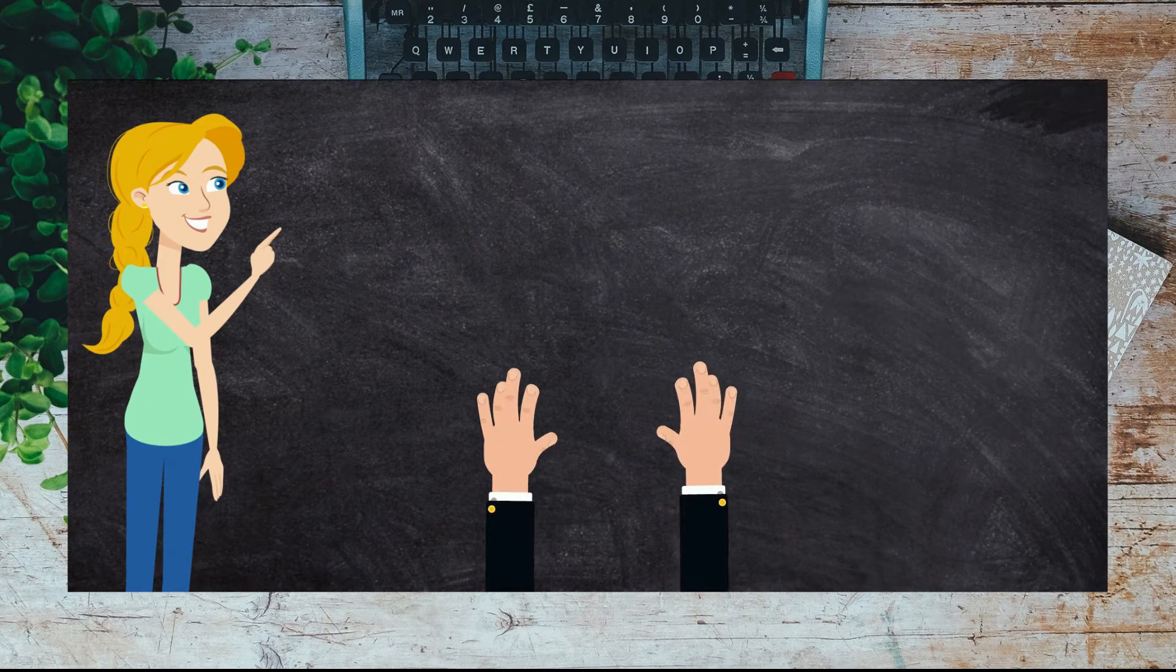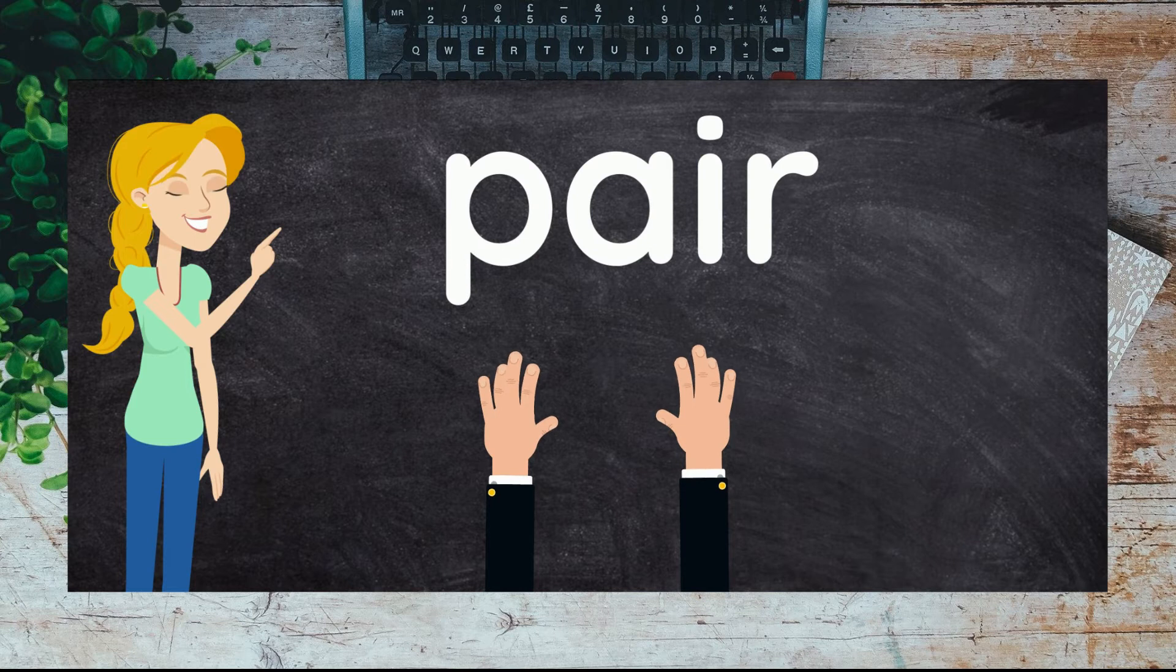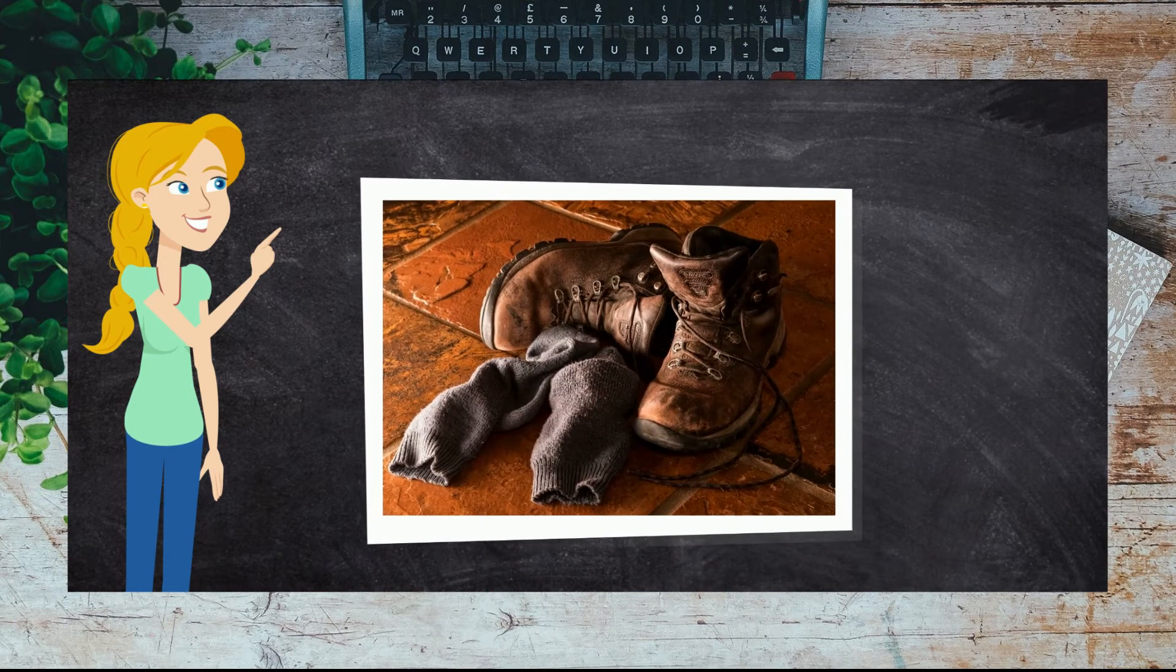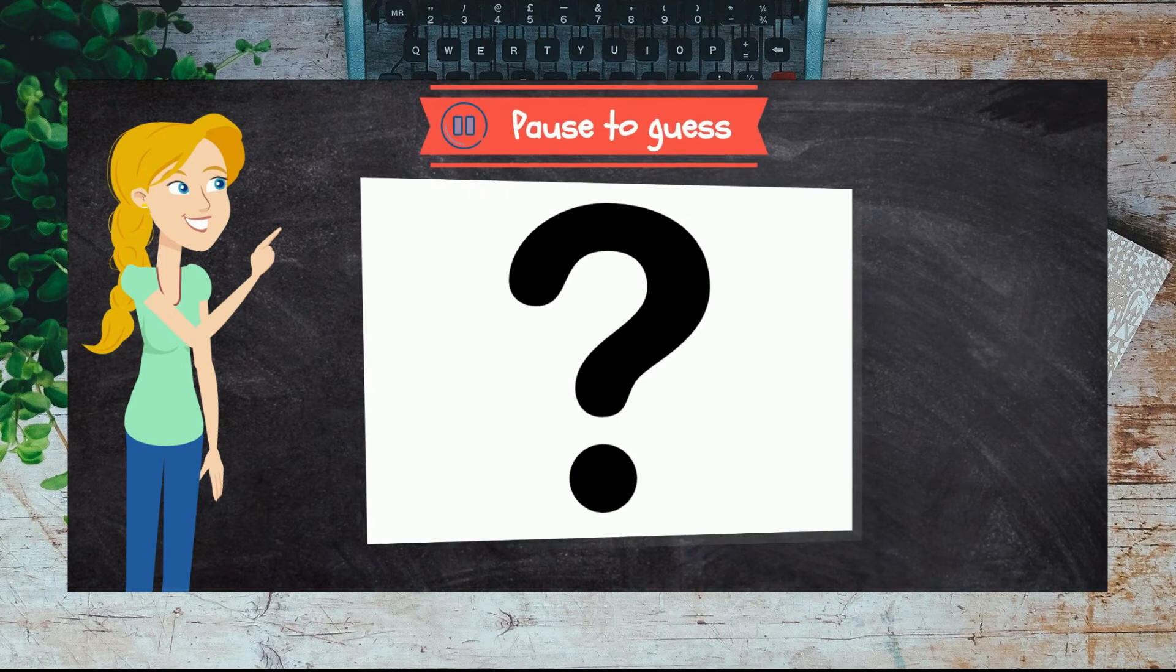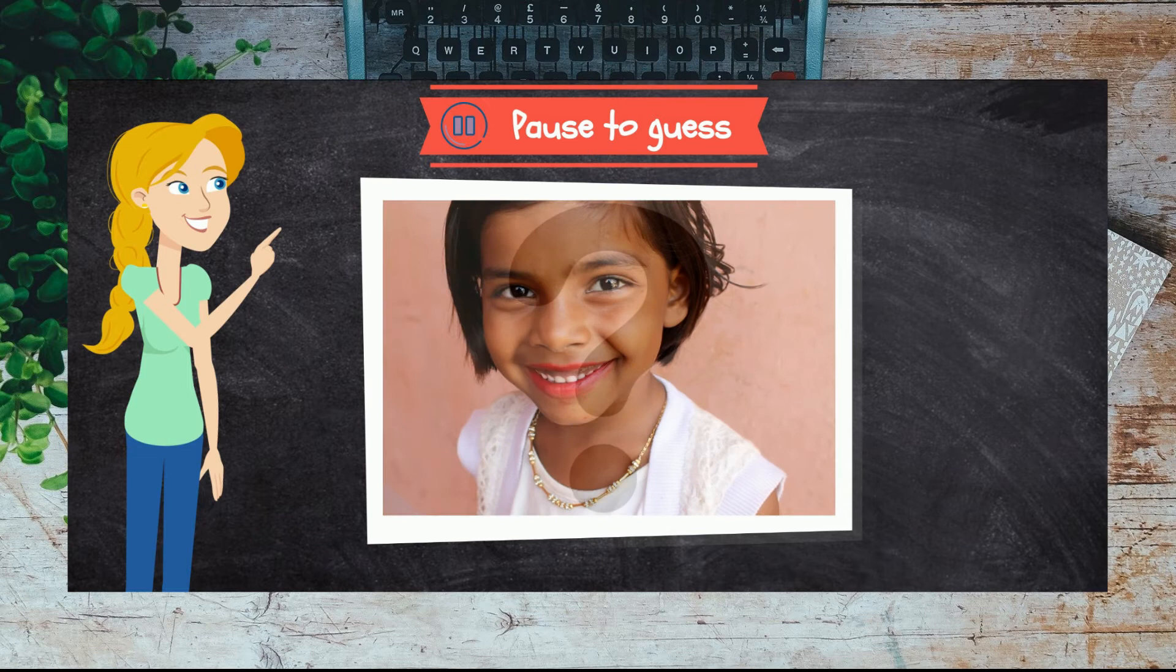When things come in twos, we call them a pair. Like a pair of socks or a pair of shoes. Can you think of any other things that come in pairs? Can you find any pairs on your body?